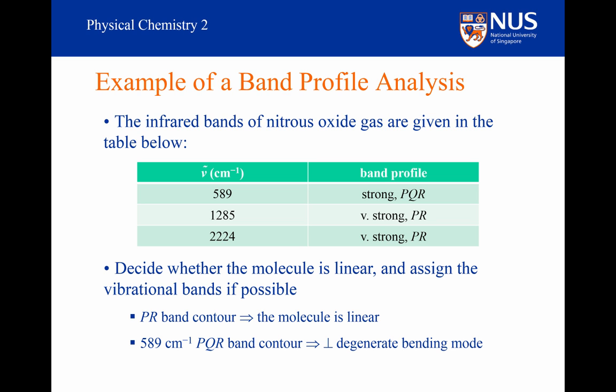Now that we know that the molecule is linear, we also know that the first band at 589 wavenumbers is a degenerate bending mode. This is because it has a PQR band profile. The only bands that exhibit a PQR band structure in linear molecules are perpendicular bands, and for a triatomic, this has to be the degenerate bending mode. Another thing to note about the bending mode is that the band is not as strong as the others. It is generally the case that bending vibrations give bands which are not as strong as stretching vibrations. This can be rationalized because stretching vibrations generally exhibit a greater change in dipole moment during the vibration.